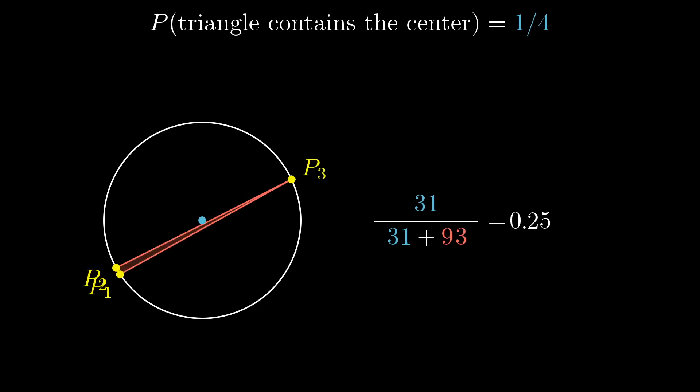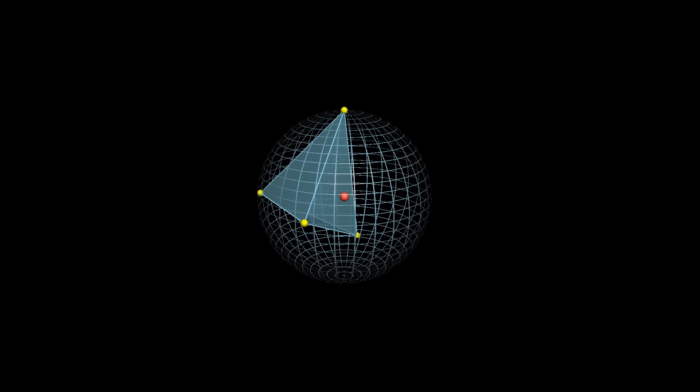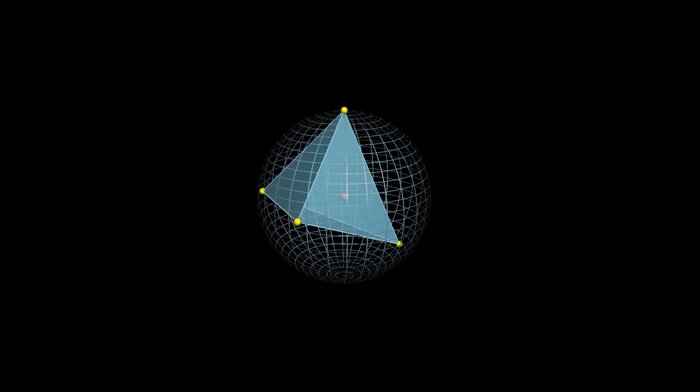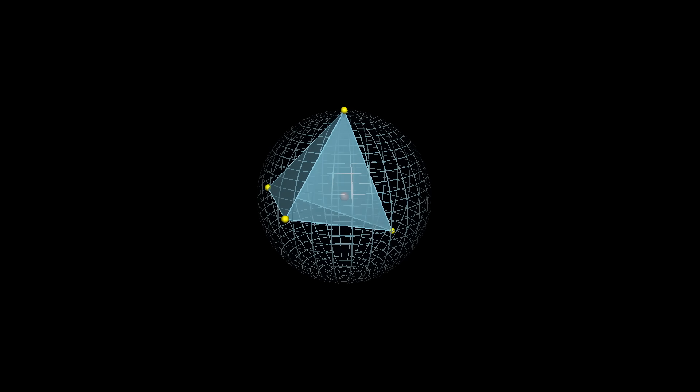But can we extend this into the three-dimensional case? If you imagine three out of those four points just being fixed in place, which points of the sphere can the fourth one be on so that the tetrahedron that they form contain the center of the sphere?